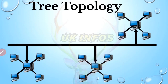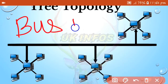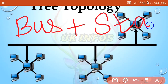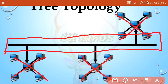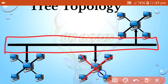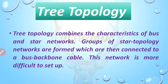Tree topology is the combination of bus and star topology. Groups of star topology networks are formed which are then connected to a bus backbone cable. This network is more difficult to set up.